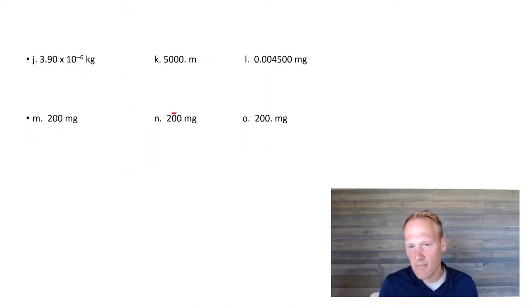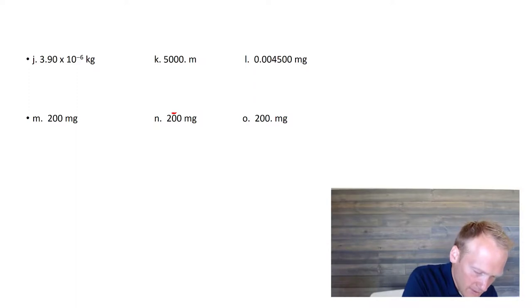I just want to show you one quick thing here before we move on. Look at M, N, and O. M has no decimal, so we'd come from the right, and we wouldn't start counting until the 2. That has one sig fig. This 200 milligrams has a bar. What that means is the 2 is significant, and this is significant, but this is not. Therefore, that would have 2 sig figs.